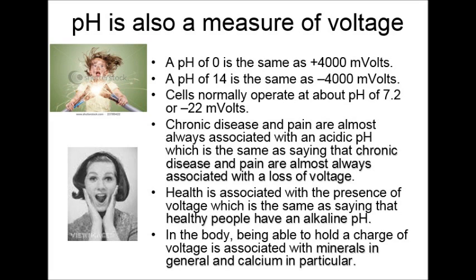Cells normally operate at about a pH of 7.2, or negative 22 millivolts. Chronic disease and pain are almost always associated with an acidic pH level, which is the same as saying they are associated with a loss of voltage. Health is associated with the presence of voltage, which is the same as saying that healthy people have an alkaline pH. In the body, being able to hold the charge of voltage is associated with minerals in general, and particularly calcium.